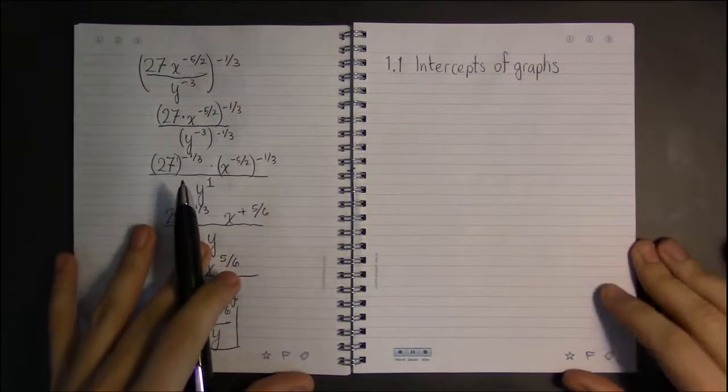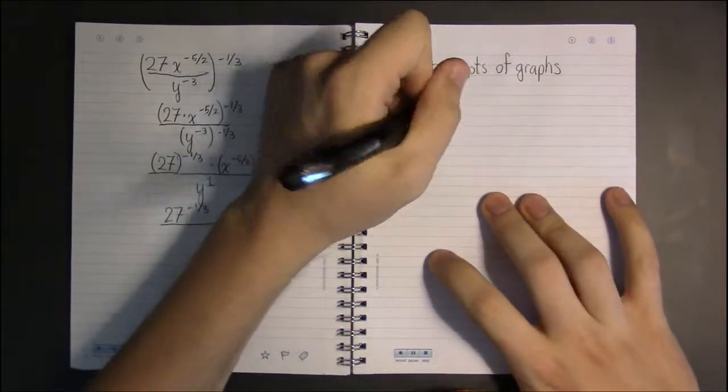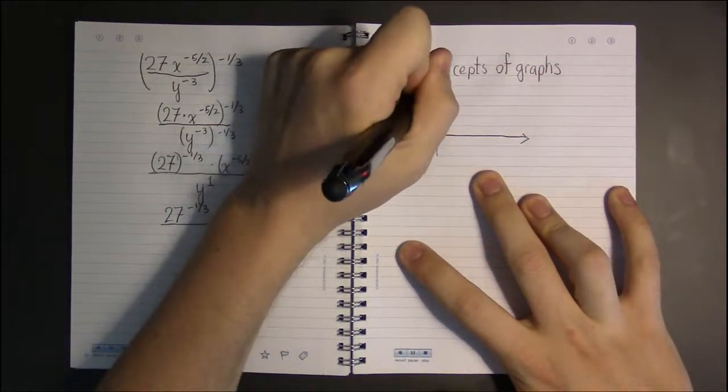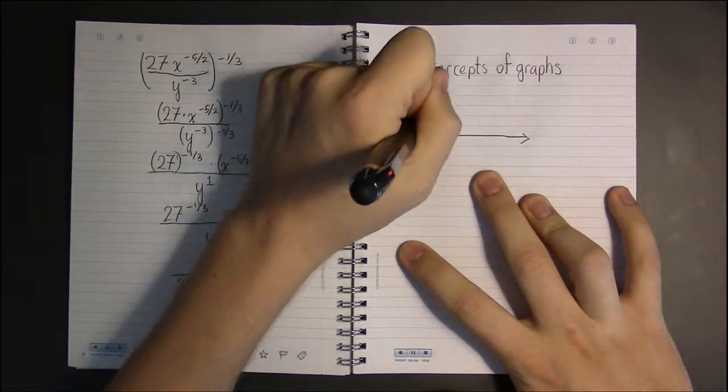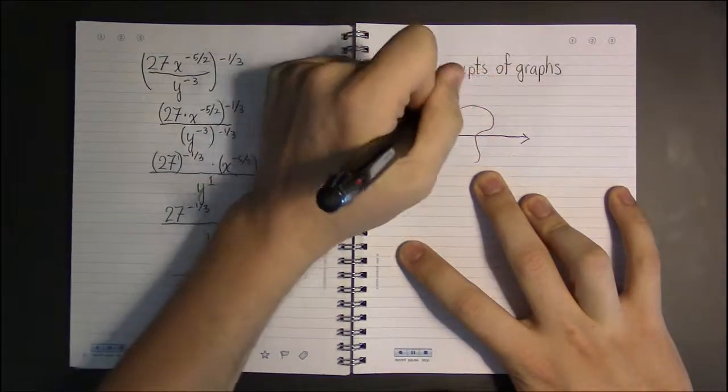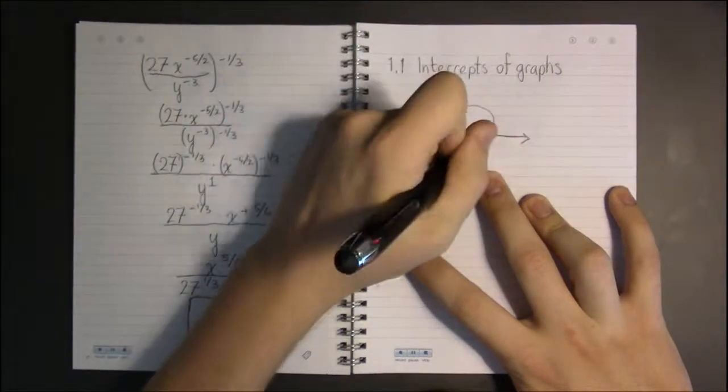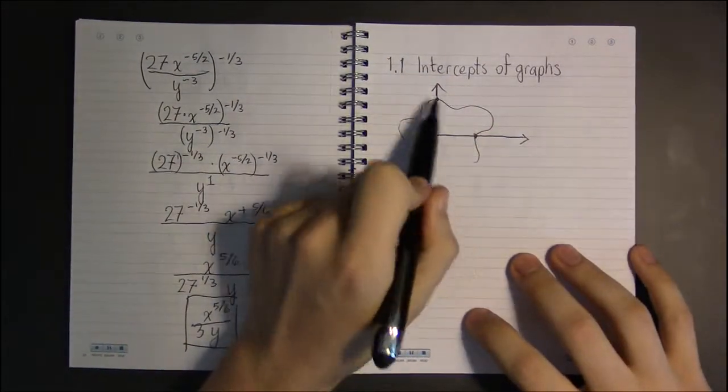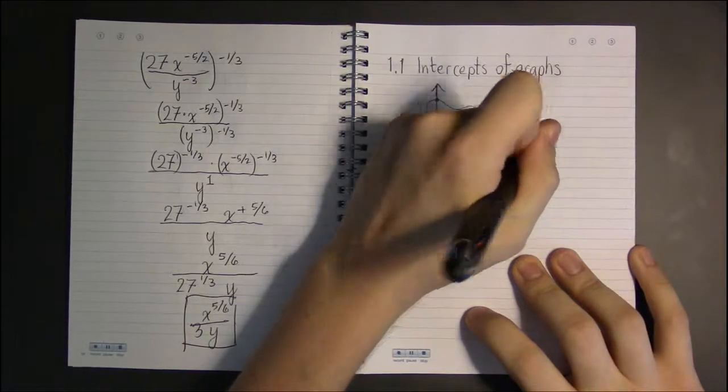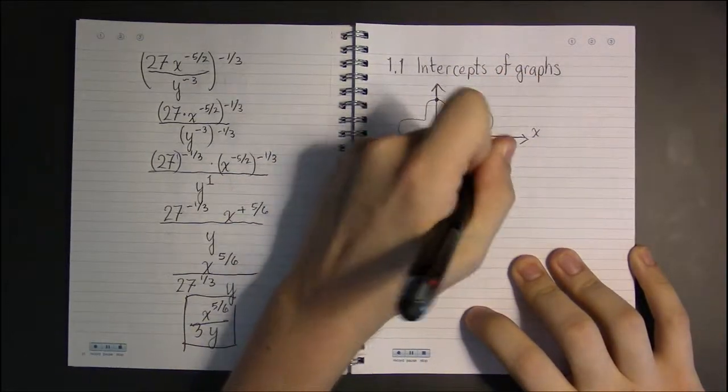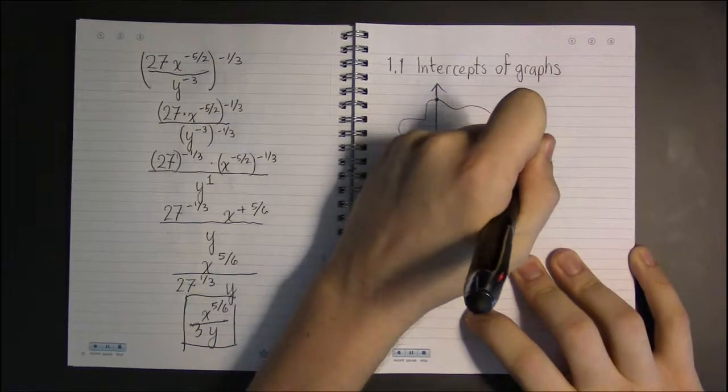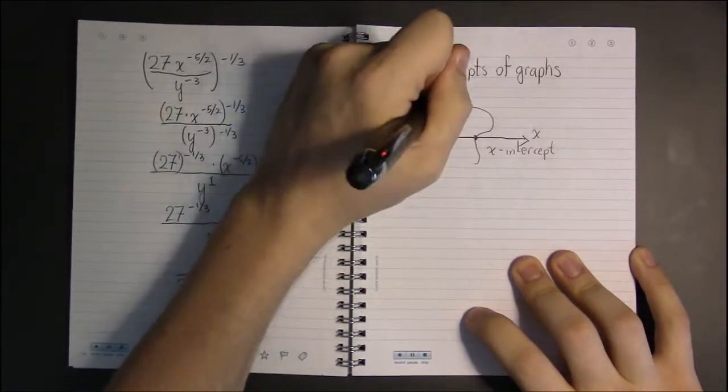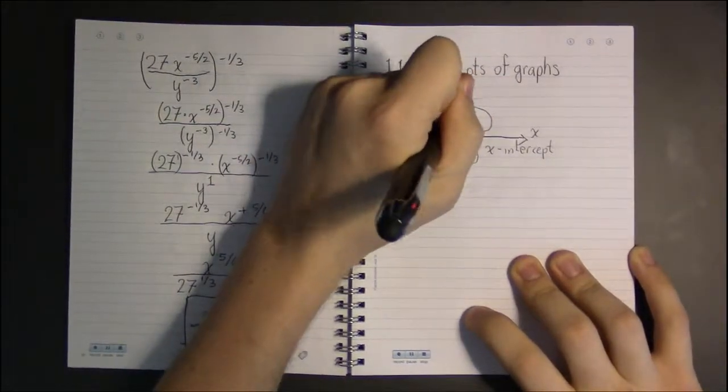There are two kinds of intercepts: x-intercepts and y-intercepts. Whenever a graph crosses the y-axis or the x-axis, these are both intercepts. When it crosses the x-axis, we call this an x-intercept, and when it crosses the y-axis, that's called a y-intercept.